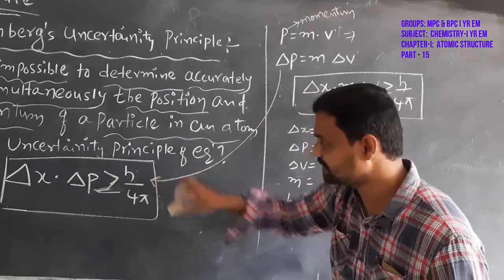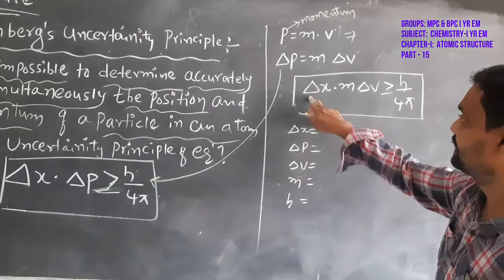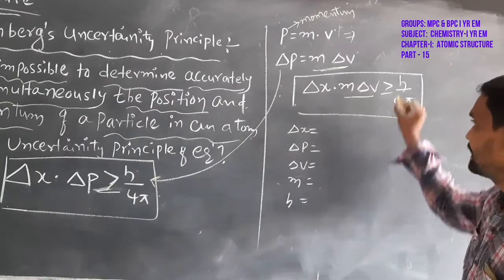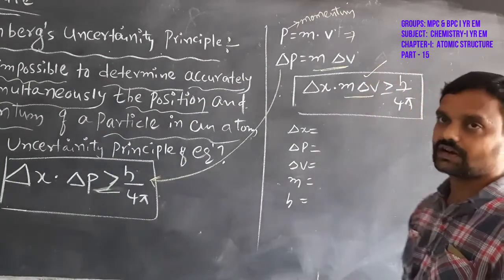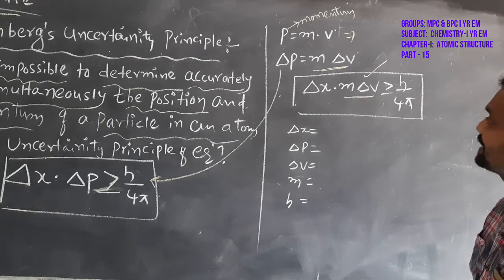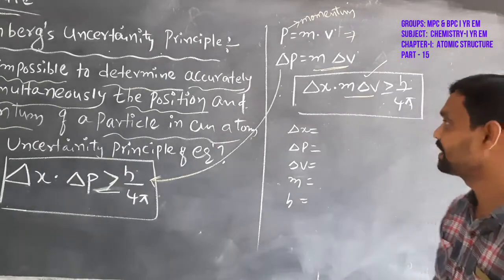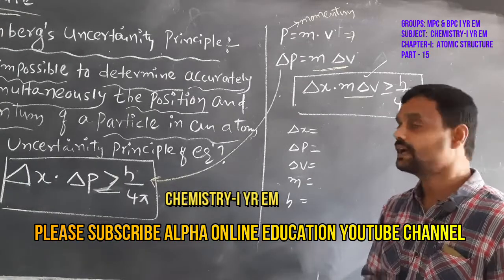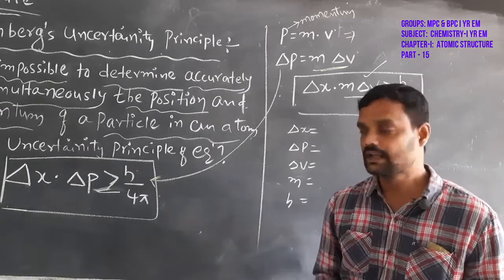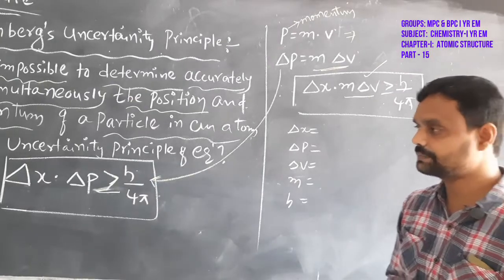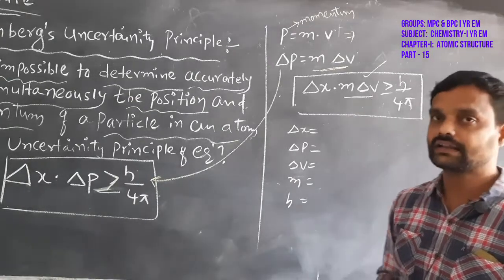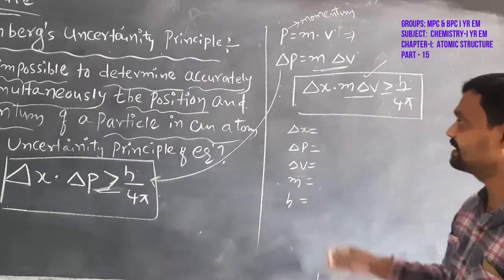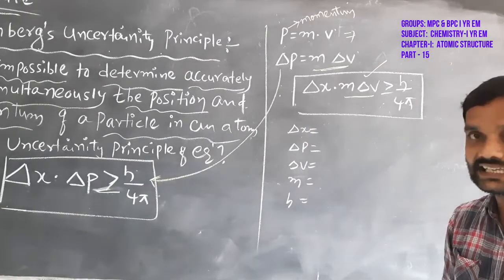Substituting delta p = m·delta v into the equation, we get: Δx · m · Δv ≥ h/4π. This is another mathematical representation of the Heisenberg uncertainty principle. In this equation, delta x is the uncertainty in position.